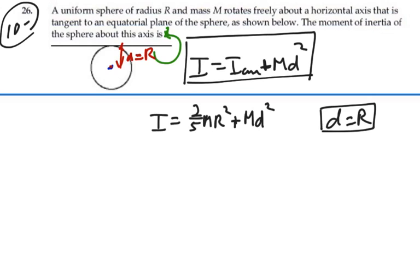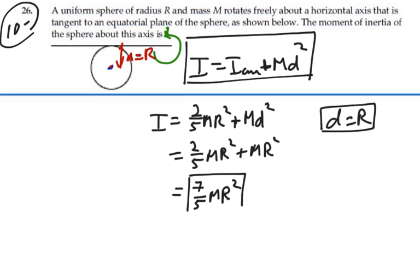It's equal to the radius of the sphere itself. So this is going to be two-fifths MR squared plus MR squared, which will give us seven-fifths MR squared. So the moment of inertia of a sphere about its edge revolving around this axis is seven-fifths MR squared.